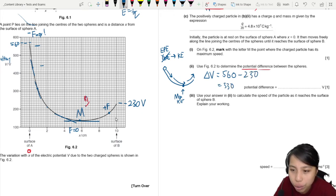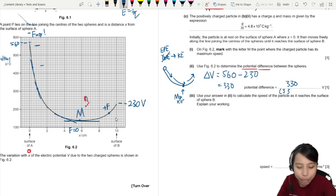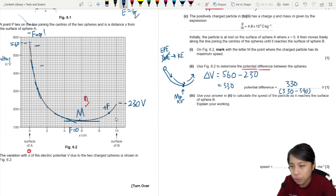The graph is a bit hard to read, I agree. So the mark scheme thankfully gives a range of values. If you get 330 to 340, it's okay, a little bit different.